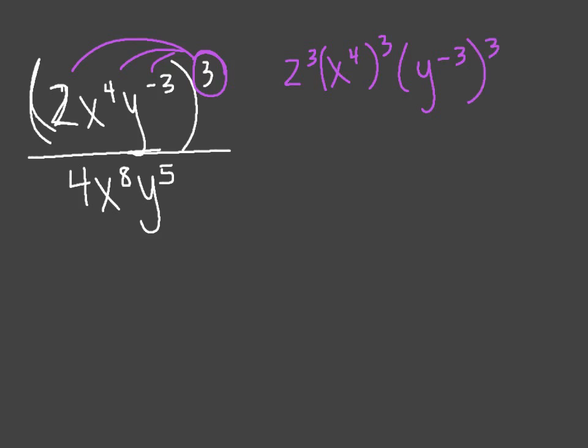So if I were to simplify this further, I could take 2 to the third power and type that in my calculator, and I would get 8. And then, if you remember, we have a property that tells us if I have a variable that has two exponents like this, like x to the fourth to the third, I multiply these two exponents. So 4 times 3 would give me x to the twelfth. Same thing with my y's. I'm going to multiply those two. So it would be y to the negative ninth power.